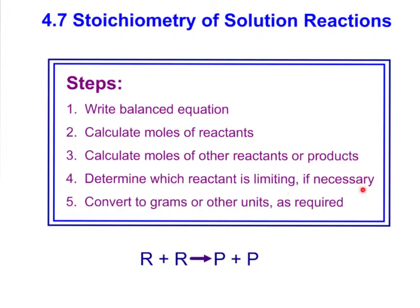Then, if we need to, we determine the limiting reactant. If not, we don't need to worry about that. At the very end, we want to convert whatever our moles are of either the product or the reactant into whatever the required unit is — it might be grams, it might be moles, or they might be asking for the number of molecules. Those are the basic steps: reactant plus reactant going to product plus product.